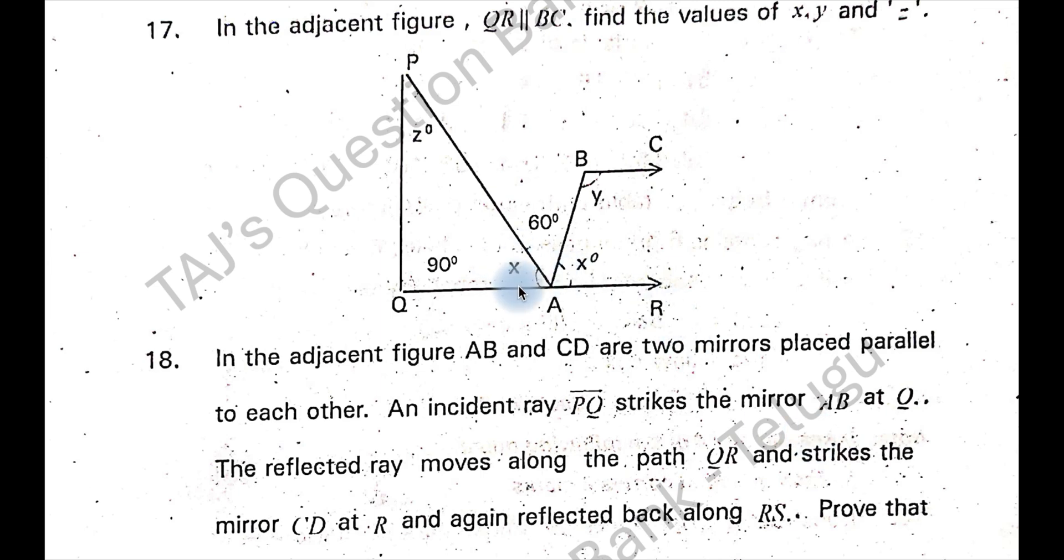What is the value of x? It will be 60 degrees. z will be 30 degrees. And y will be, this is 60, this will be again 60, y will be 120 degrees.